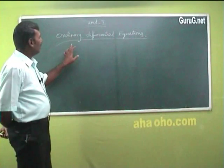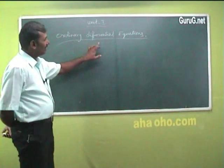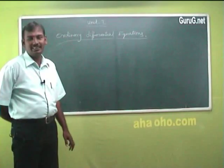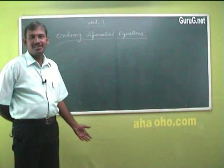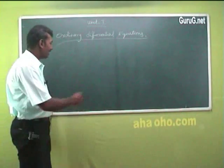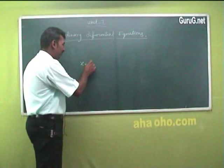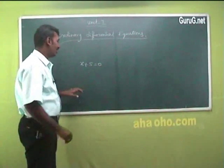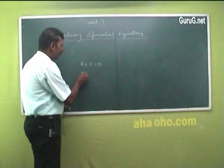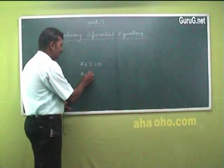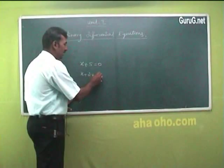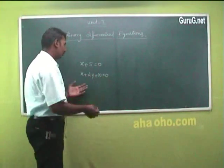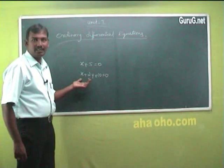For Unit 1, Ordinary Differential Equations, we will first review linear equations. A linear equation with one variable: x plus 5 equals 0. A linear equation with two variables: x plus 2y plus 10 equals 0. These are linear equations.